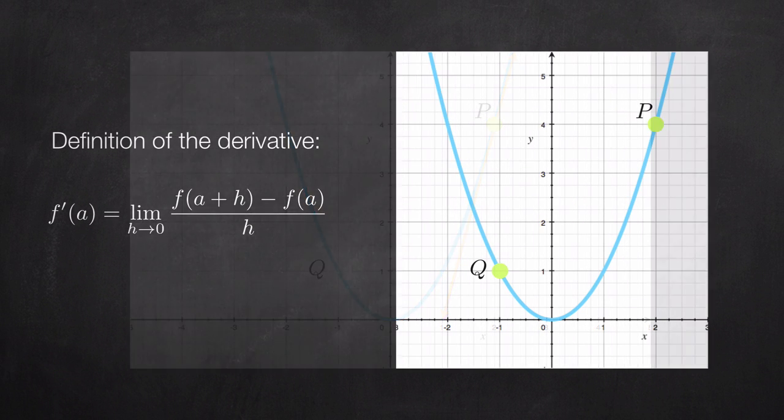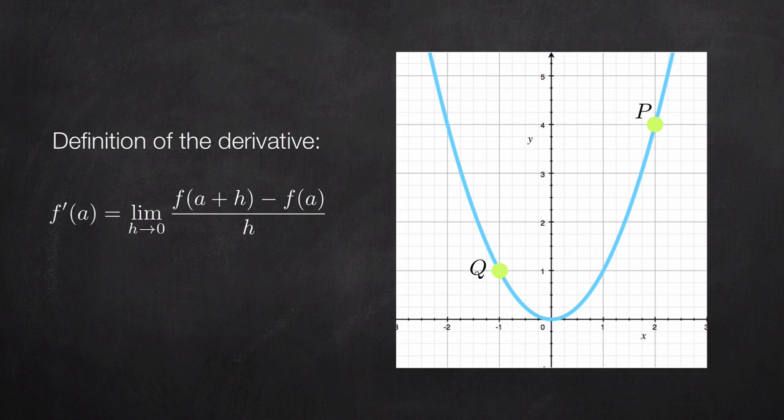And that's the definition of the derivative. Because remember that in the definition of the derivative, we call h the distance between P and Q. And we say that when h goes to 0, in other words, when the distance of our two points is eliminated, the result is the derivative.